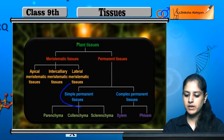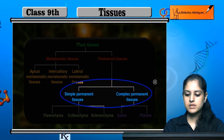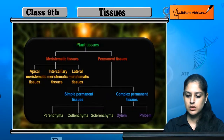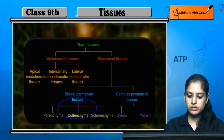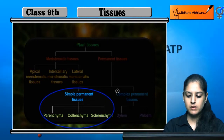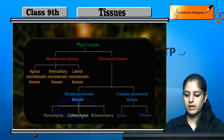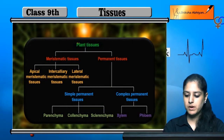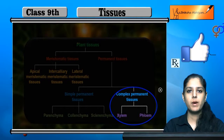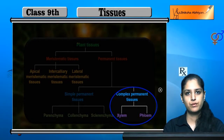Further, the permanent tissues are divided into two parts: simple permanent tissues and complex permanent tissues. Simple permanent tissues are divided into three parts: parenchyma, collenchyma, and sclerenchyma. And the complex permanent tissues are further divided into two parts: xylem and phloem.